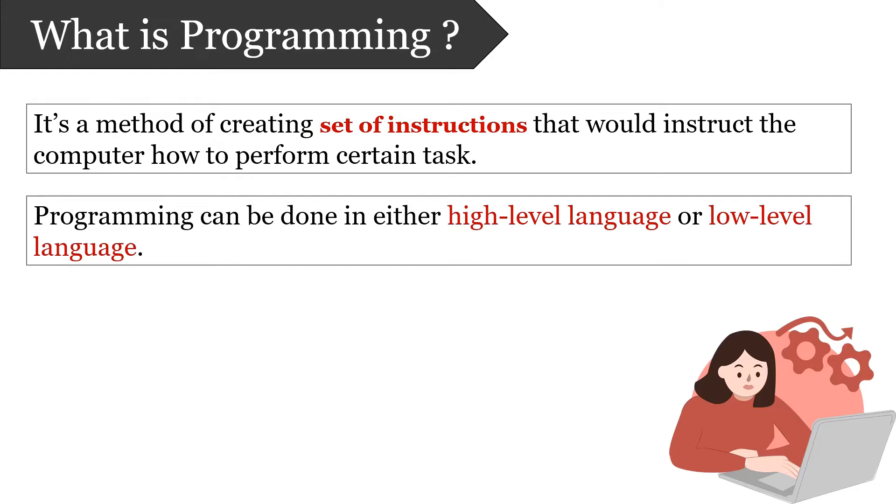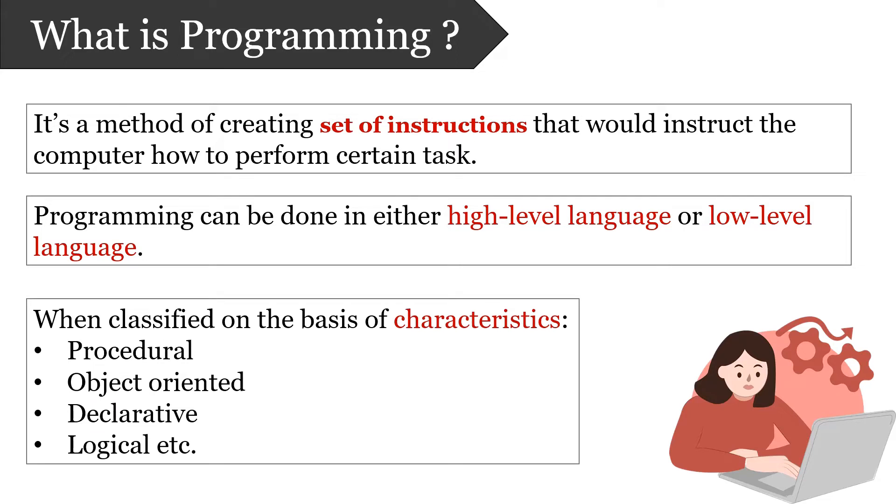On the basis of characteristics, programming languages can be classified as procedural, object oriented, declarative, logical, etc. The most common among these are procedural and object oriented programming. Both of these implement programs in a high level language.